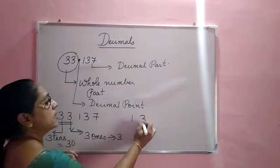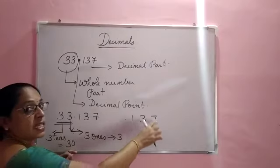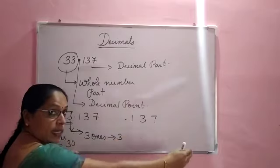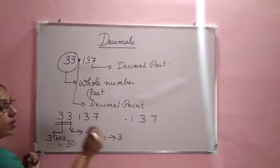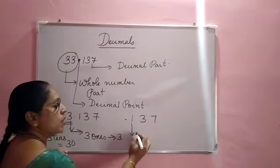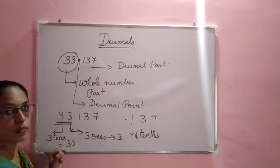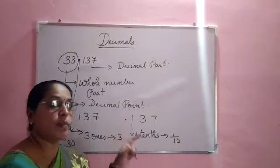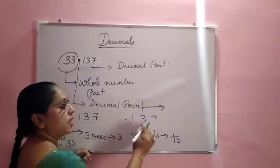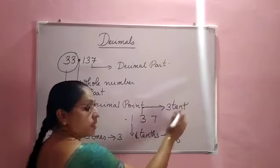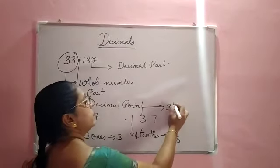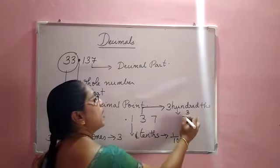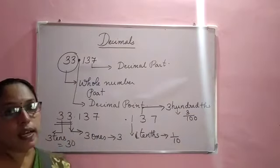After the decimal point we have 1, 3, 7. The place value after the decimal point goes from left to right, starting with the tenths place. So the digit 1 is in the tenths place, which is written as 1/10. The digit 3 is in the hundredths place, written as 3/100.